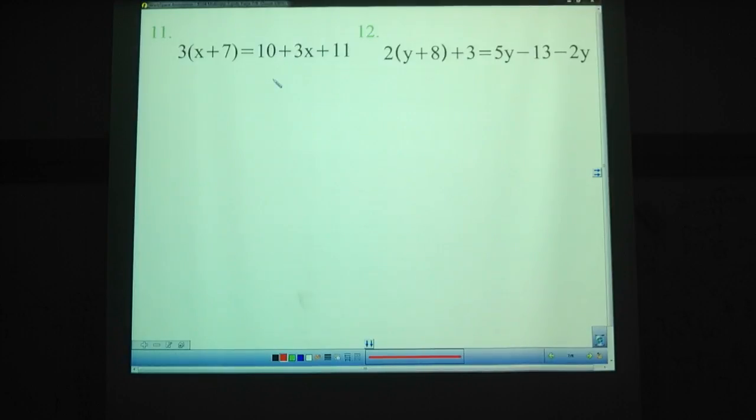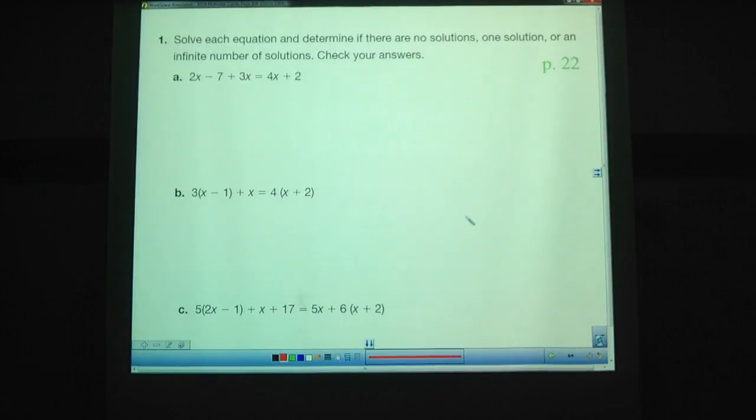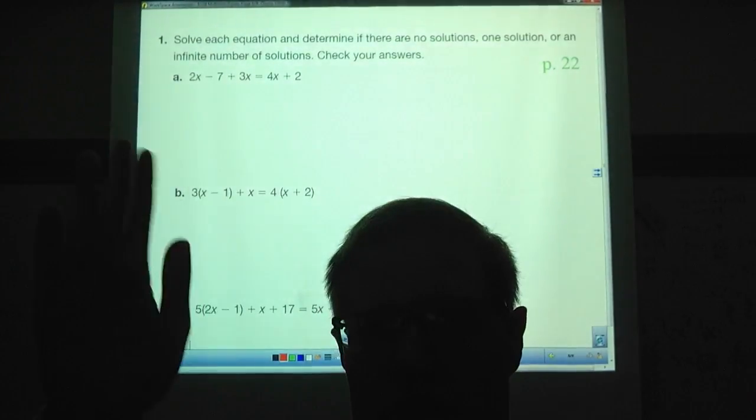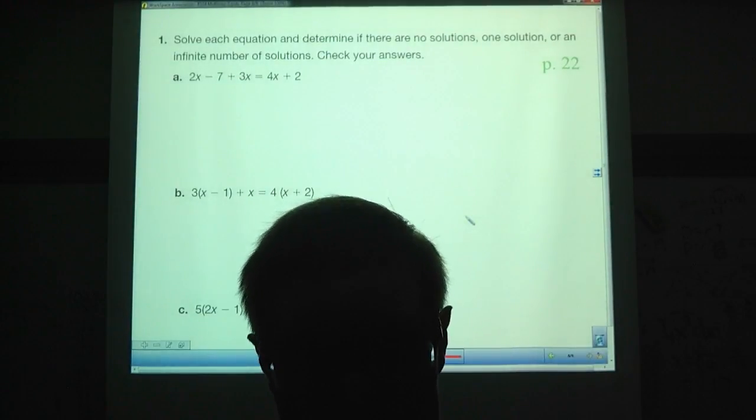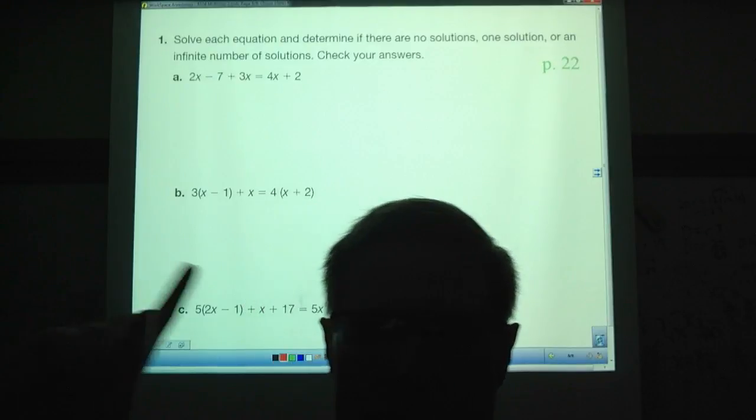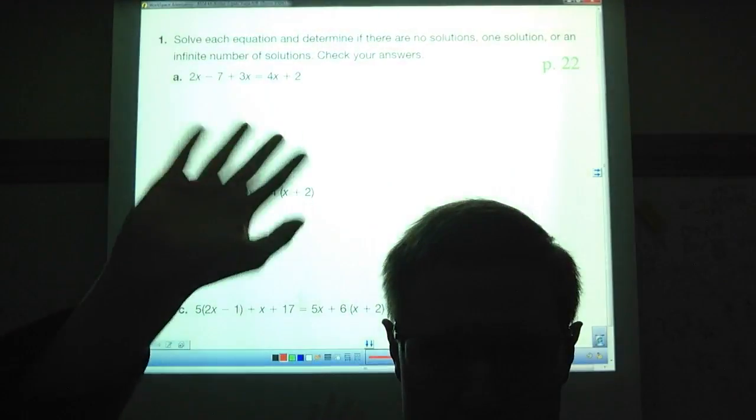We had a homework assignment on this day, and that was page 22 from the book. Do these two equations here, A, B, and C. And that is all. That is what you need to do. Yeah. Finish up all the notes, the ones I didn't go over with you. I want you to do it on your own. Try them out. And then these ones are homework. Do those as well. See you later. Bye.